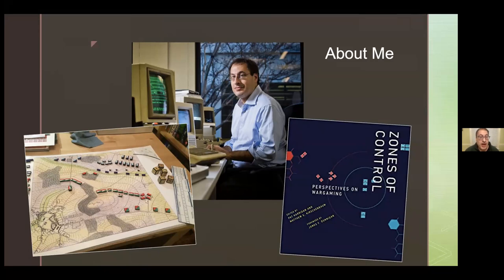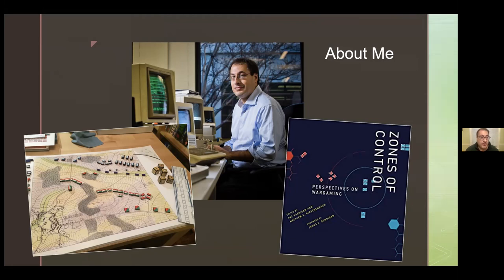I teach here in DC. I'm on the faculty at the University of Maryland in the Department of English. I work in a field called digital studies, also sometimes known as media studies. I've published a couple of books on the history of literary computing — that's the day job. I'm also a longtime hobby gamer and co-editor of the Zones of Control volume from MIT Press, done a few years back with my co-editor Pat Harrigan.